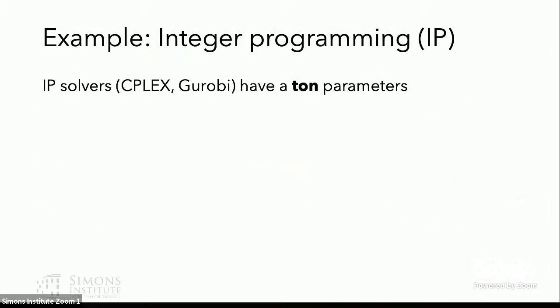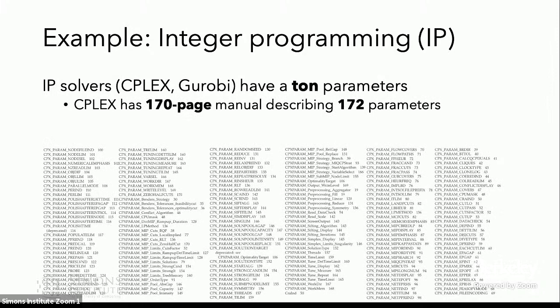And one of the key challenges is that these very broadly applicable algorithms often come with a ton of tunable parameters. So this is certainly true, for example, of integer programming solvers like CPLEX and Gurobi. CPLEX, for example, comes with a 170-page manual describing 172 different tunable parameters.